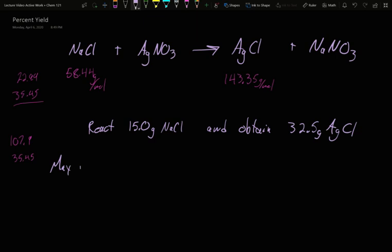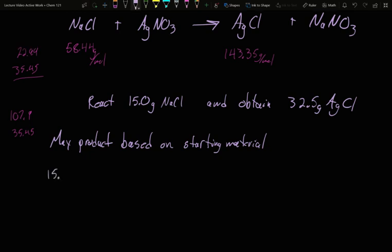First we need to figure out what is it we were supposed to make. And so we're going to calculate the max product based on starting material. The idea is I put in 15 grams of sodium chloride. How much product could I have made? Well, 15.0 grams of NaCl, and our goal is to find the max silver chloride. I'm in weight of one compound and I want to be in weight of another compound. I can't go straight from weight of one molecule to weight of another. I have to go through moles. So my first step here is to get out of grams of NaCl and into mole of NaCl. Remember, moles are numbers. Once I have the number of sodium chloride, I can use a balanced reaction to find the number of other molecules. Well, there are 58.44 grams of sodium chloride in every one mole.